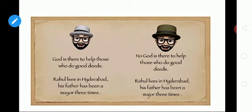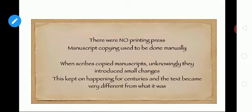Here is an example: one version reads 'Rahul lives in Hyderabad, his father has been a mayor three times,' while another reads 'his father has been a major three times.' This happened because there was no printing press — manuscript copying was done manually. While copying, scribes made slight changes unknowingly, and this kept on happening for centuries, making the text very different from the original.